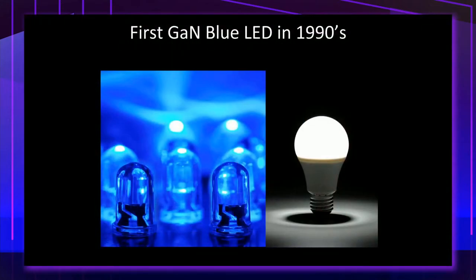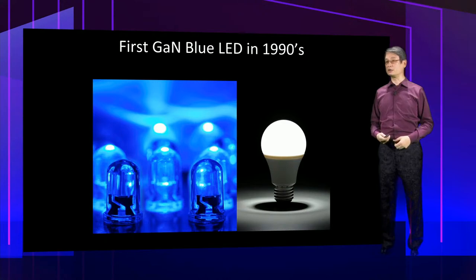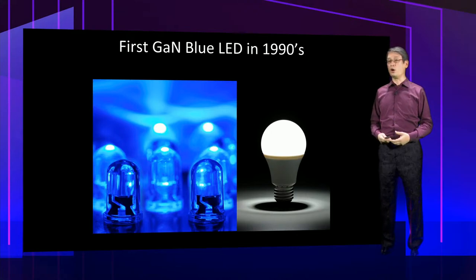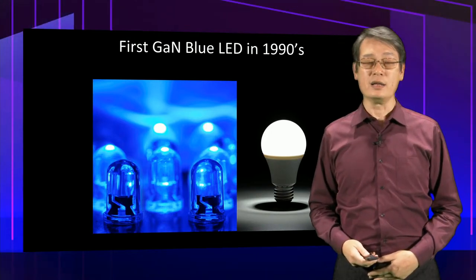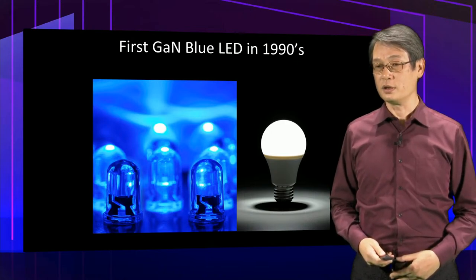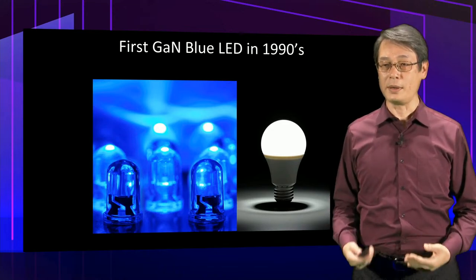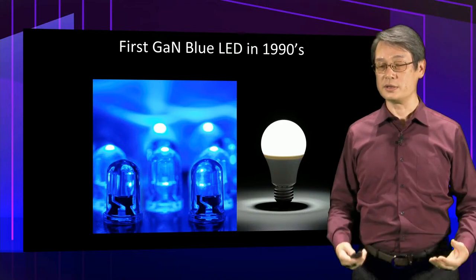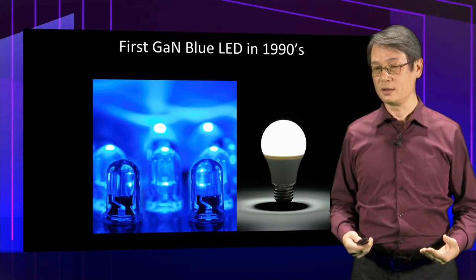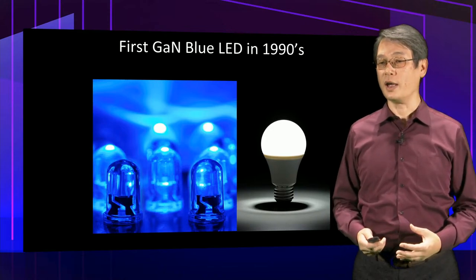The first blue LED was demonstrated in the 1990s. This was a very important milestone because by then all three primary colors of light became available: red, green, and blue. Essentially, all the colors became available for display. Based on that same technology foundation, white light LED was later developed and rapidly replaced existing traditional lighting, saving an enormous amount of energy for the world.